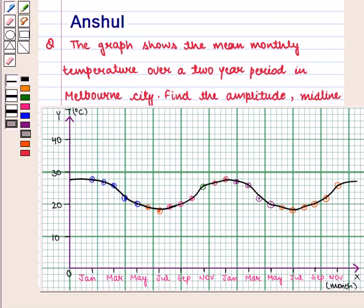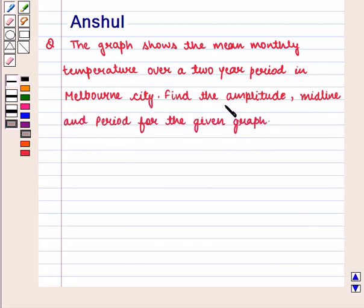Hello and welcome to the session. In this session we are going to discuss the following question: the graph shows the mean monthly temperature over a 2 year period in Melbourne City. Find the amplitude, midline and period for the given graph.